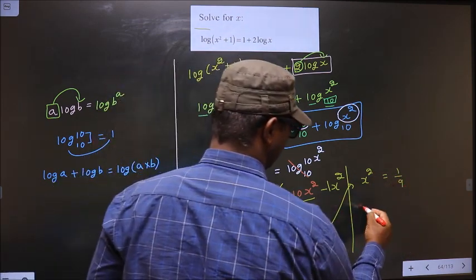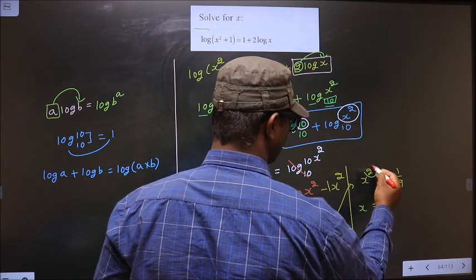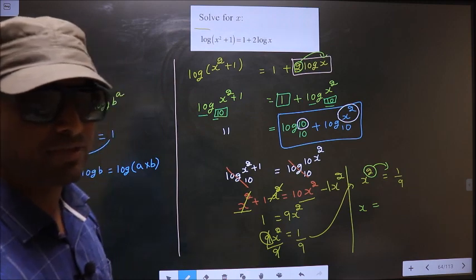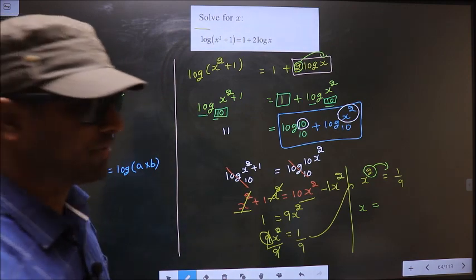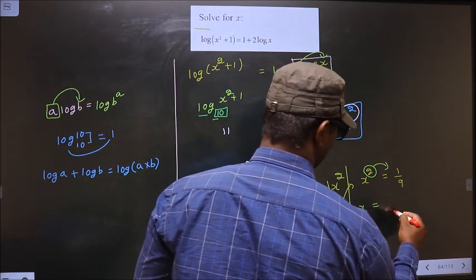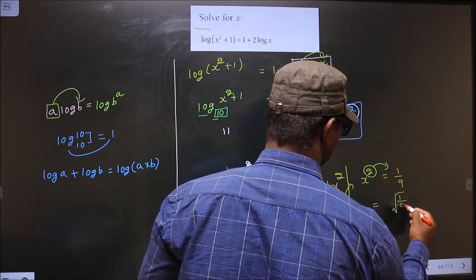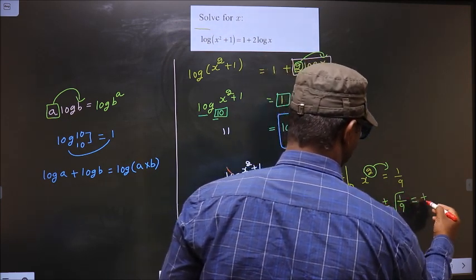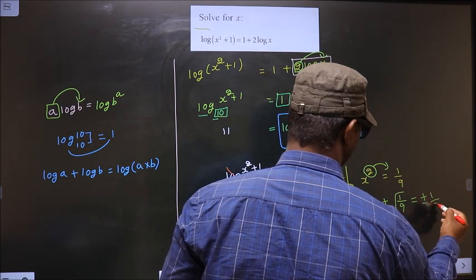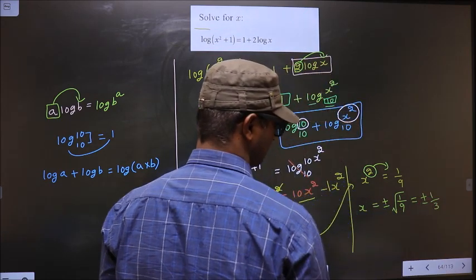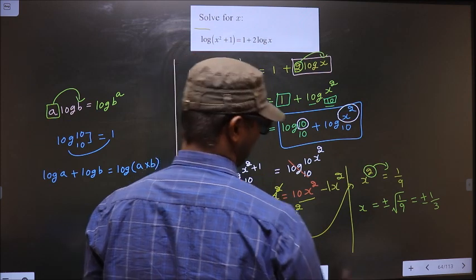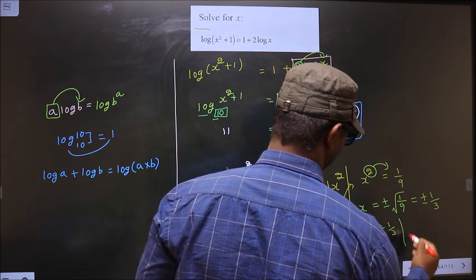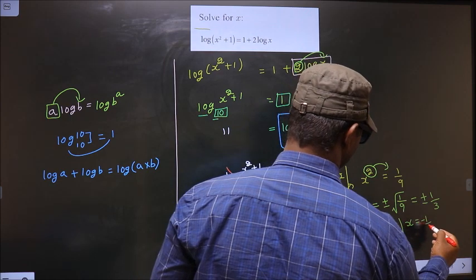Now to get x, we should shift square to the other side. Whenever we shift square to the other side, it will become square root. Not only that, we should consider both positive and negative. So that is x = ±√(1/9) = ±1/3. x = +1/3 or x = -1/3.